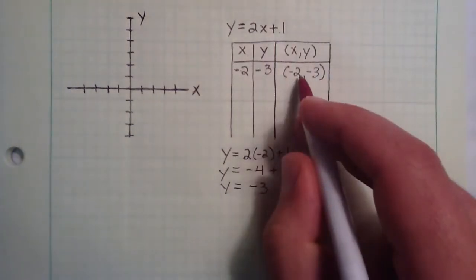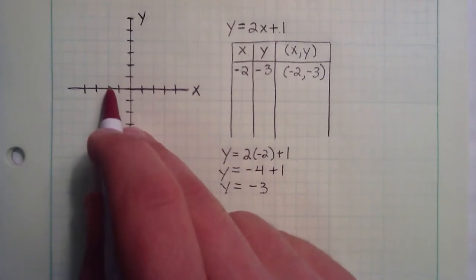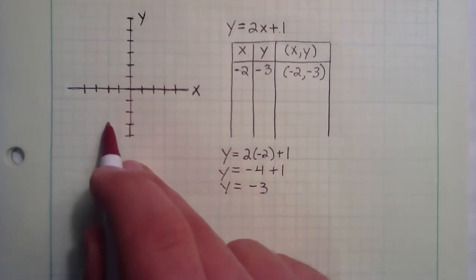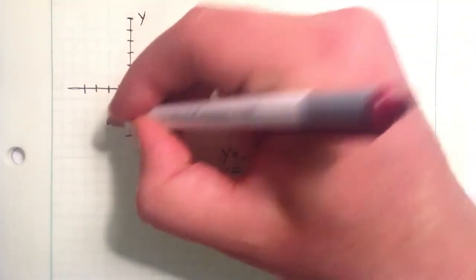So we're going to go ahead and plot this now. So going over negative 1, negative 2 in the x direction, and negative 1, negative 2, negative 3 in the y direction gives us our first point of the line right here.